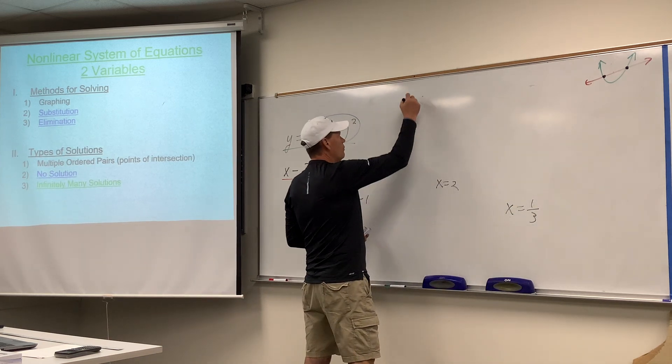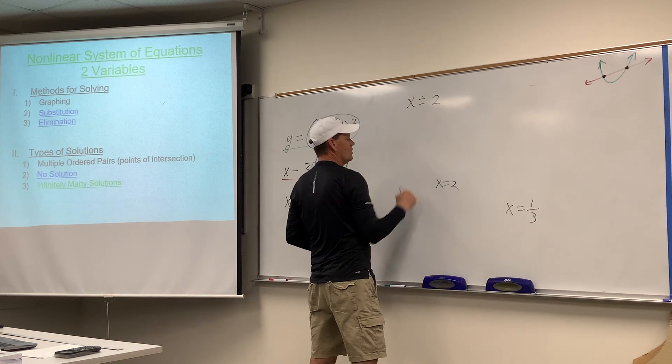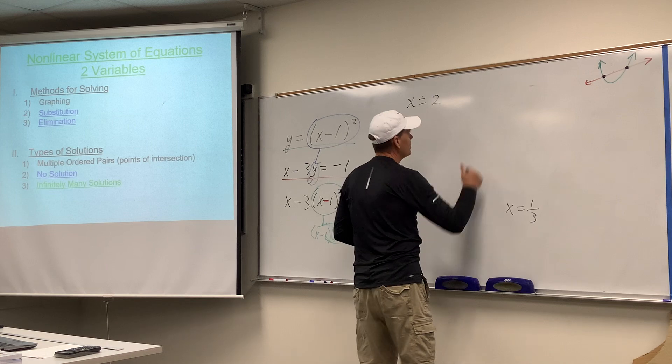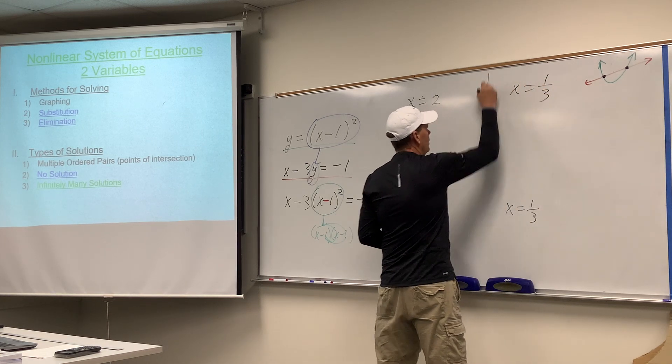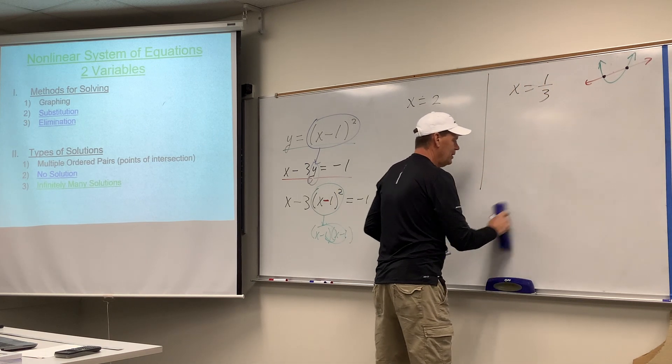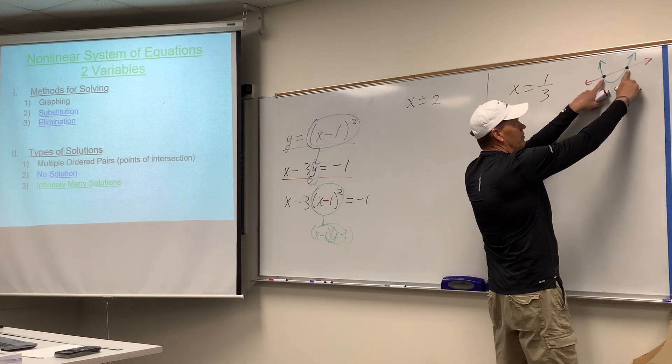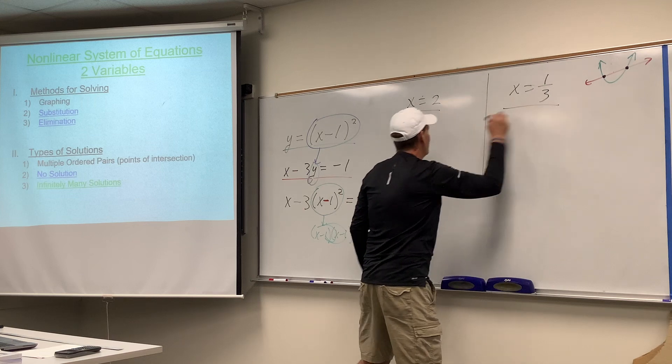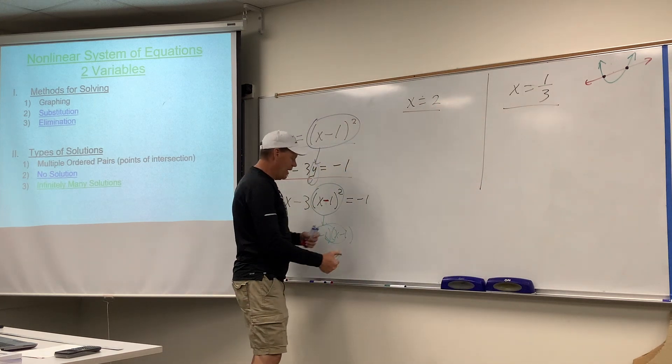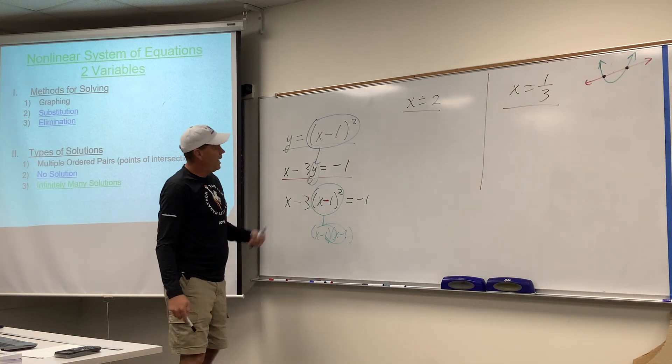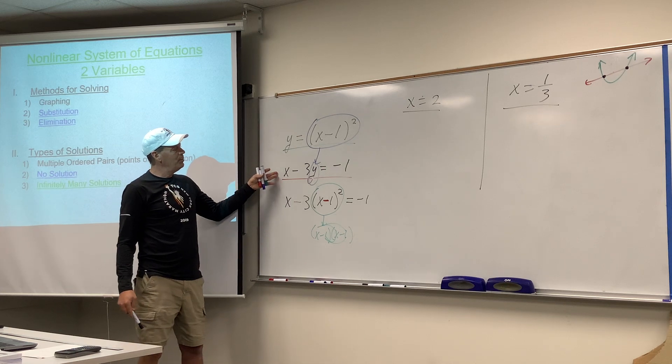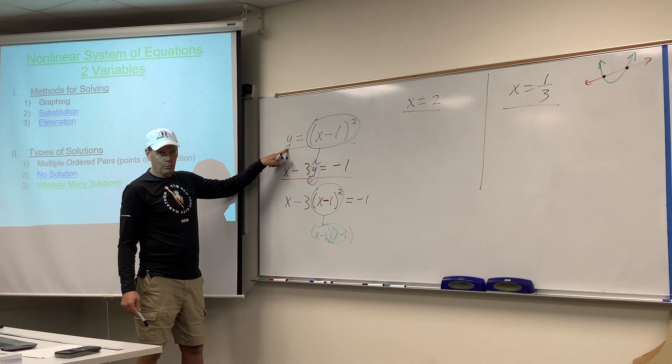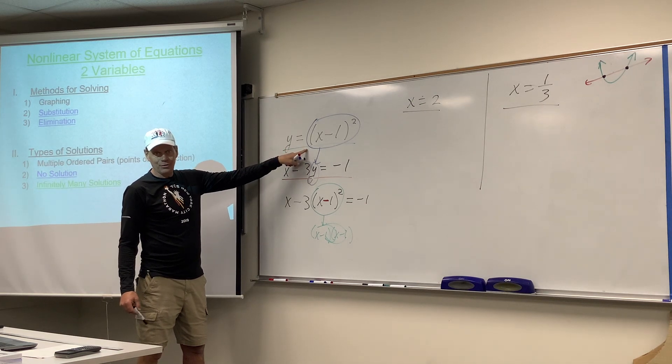So we have the value of x equals 2, which needs a y coordinate, and we have a different value of x, one third. And I would assume that each one, see, two different values of x, two different points. So, this x says, who's my y value? Where's my y value? And again, we can plug it in to either one back here, but I've always thought that if you have an equation that says y equals, and you want to know what y equals, that's the one to use.